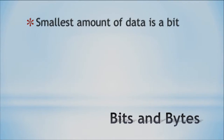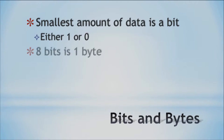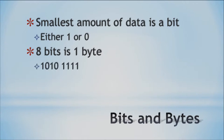A bit is the smallest amount of data within the computer. All your data in memory, stored on your hard drive, or even being transmitted over the internet is stored and sent as bits. A bit can either be a zero or a one. We take eight bits and this forms a single byte. If you think about a 64-bit computer, it can process eight bytes at a time. From a byte, you can get into your kilobytes, megabytes, gigabytes, and terabytes — they're all related and intertwined.